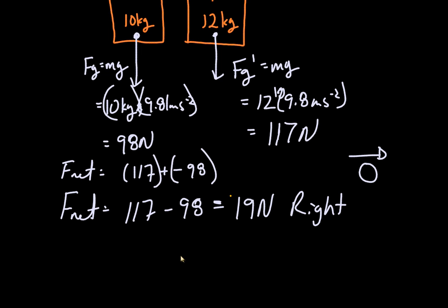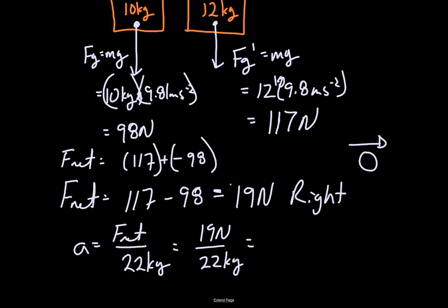Let's first figure out what that does in terms of acceleration of the system. Acceleration of the system is all of the force divided by all of the mass. So we should get 19 newtons divided by 22 kilograms. Remember that this force is acting on the total mass of the system. We get about 0.86 meters per second squared in a rightward direction.